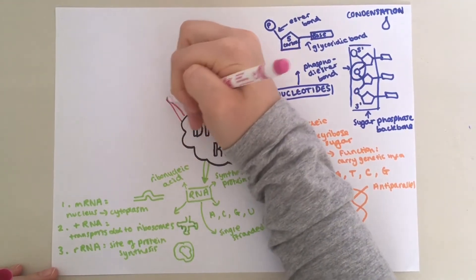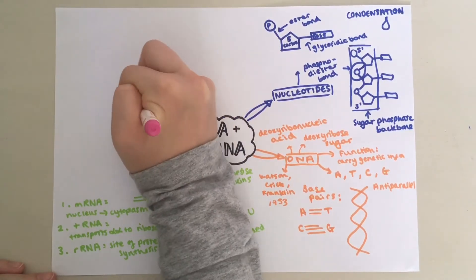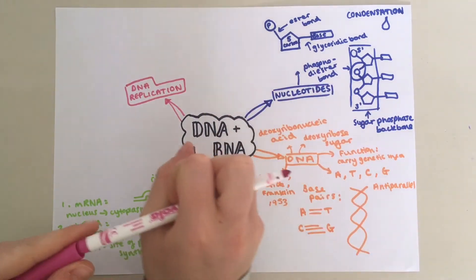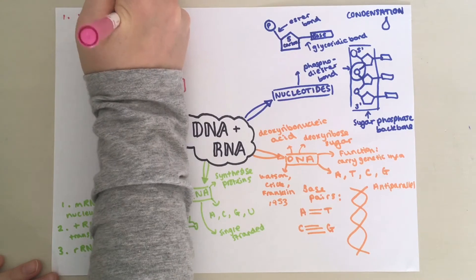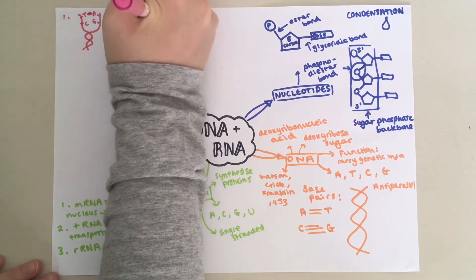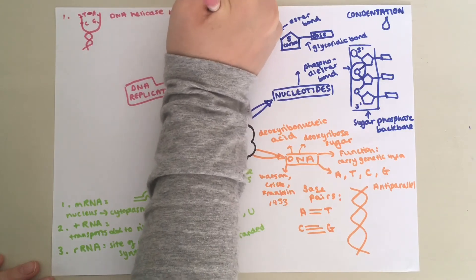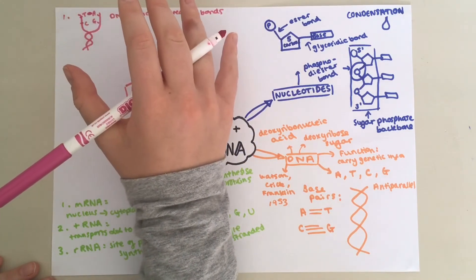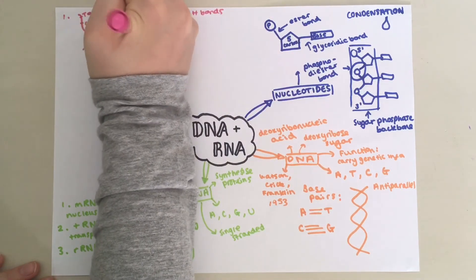Lastly, let's talk about DNA replication. Firstly, I will just go through step-by-step how DNA replicates. Step one. DNA helicase will break the hydrogen bonds between complementary base pairs on the two polynucleotide strands. Therefore, the helix unwinds.